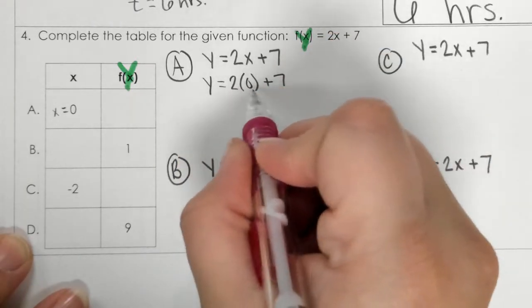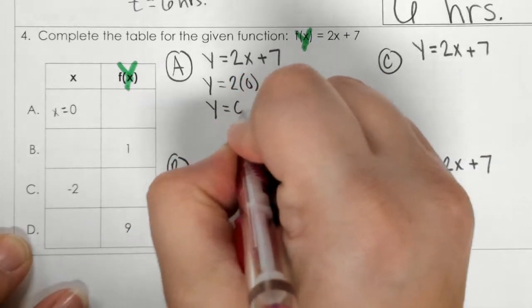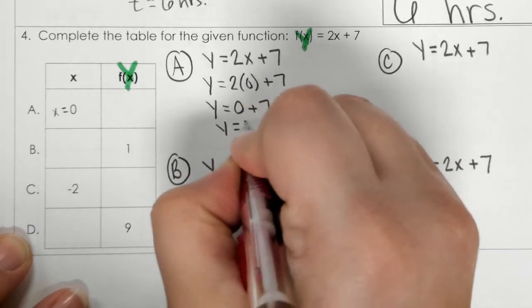And then, I just solve that. So, 2 times 0 is 0 plus 7 is 7.